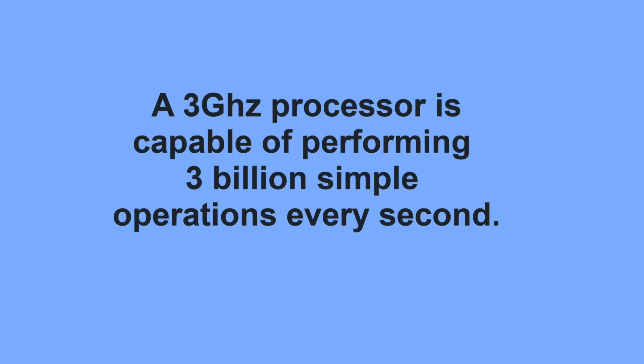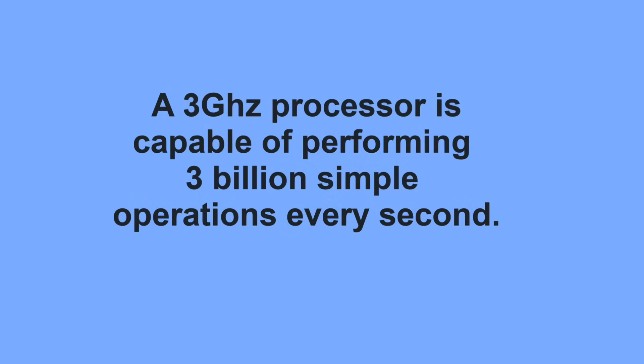While the clock speed isn't one-for-one because some things take longer than others, a reasonable visualization is that a 3 GHz processor is capable of performing three billion simple operations — like addition — every second. Of course, you know where that's going: that's not fast enough.